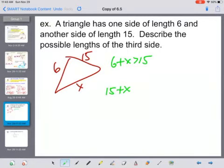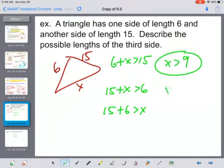So 6 plus x has to be greater than 15. 15 plus x has to be greater than 6. And 15 plus 6 has to be greater than x. So this first one tells us that x has to be greater than 9. This next one tells us that x has to be greater than negative 9. And then this next one tells us that x has to be less than 21.